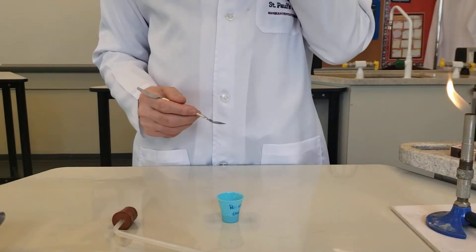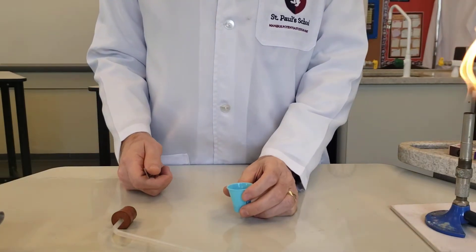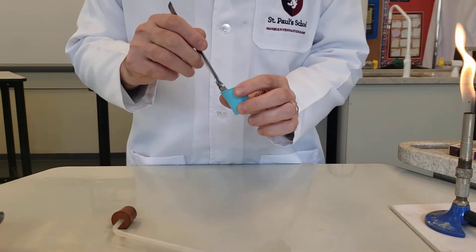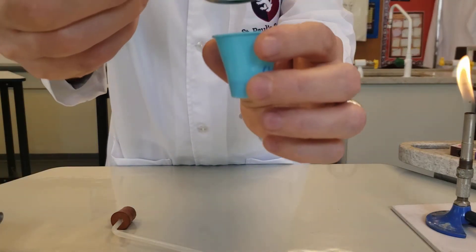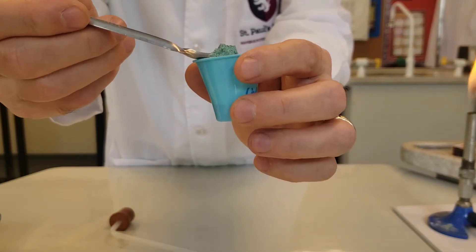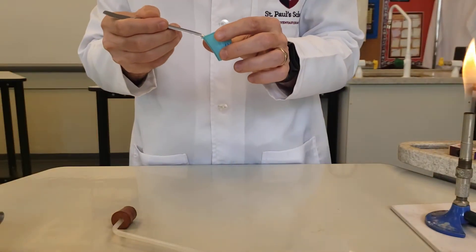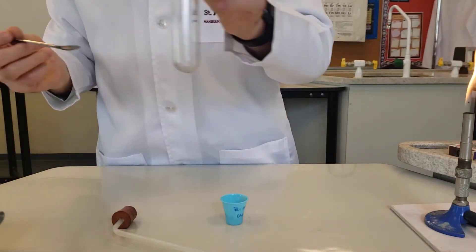Today I'm going to show the thermal decomposition of copper carbonate. Now copper carbonate is a green compound. See there, pale green colour. And what I'm going to do is take a small amount of this copper carbonate in a boiling tube.